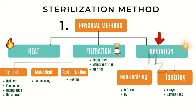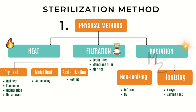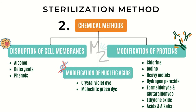Two types of radiation are used to kill microorganisms: non-ionizing radiation, which includes infrared and UV, and ionizing radiation, which includes X-rays and gamma rays. Ultraviolet light and X-radiation are often used to sterilize heat-sensitive items. They kill by damaging DNA.